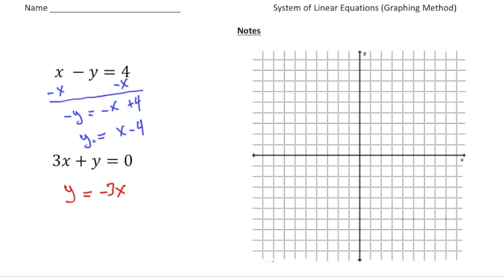I'm going to graph y equals x minus 4 in blue. The y-intercept is at negative 4, and the slope is 1. Going up 1 over 1 repeatedly, up 1 over 1, up 1 over 1, up 1 over 1 — there we hit the x-intercept. Also going down 1 left 1, down 1 left 1. With your ruler, try the best you can, nice and neat, right through the points.